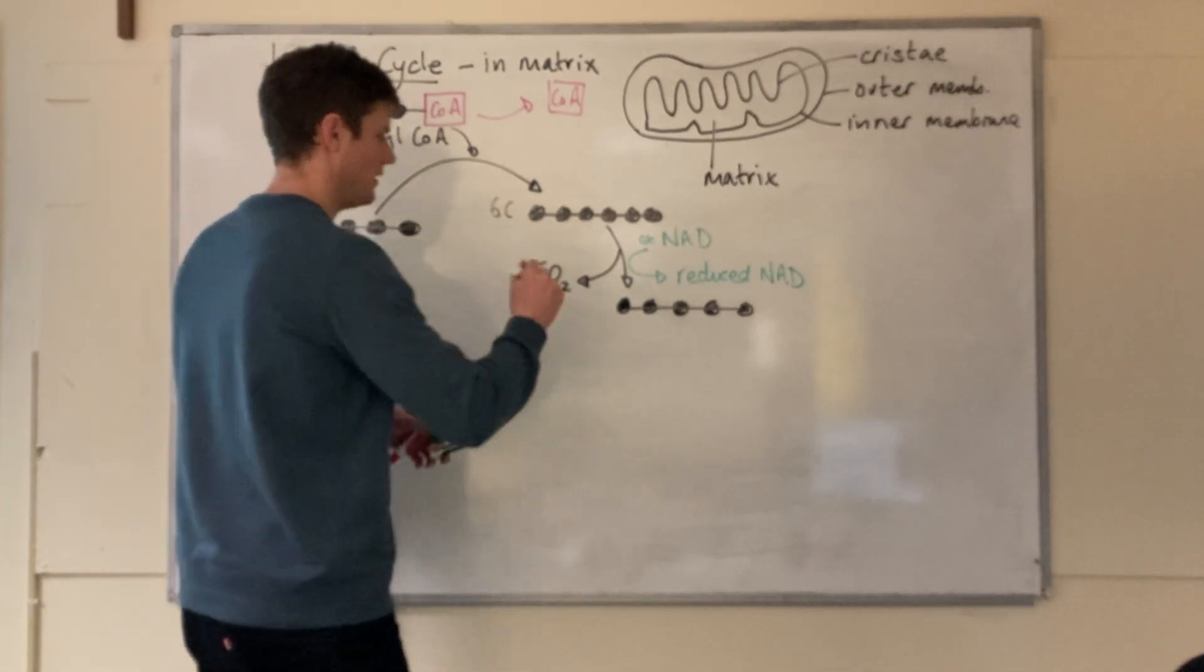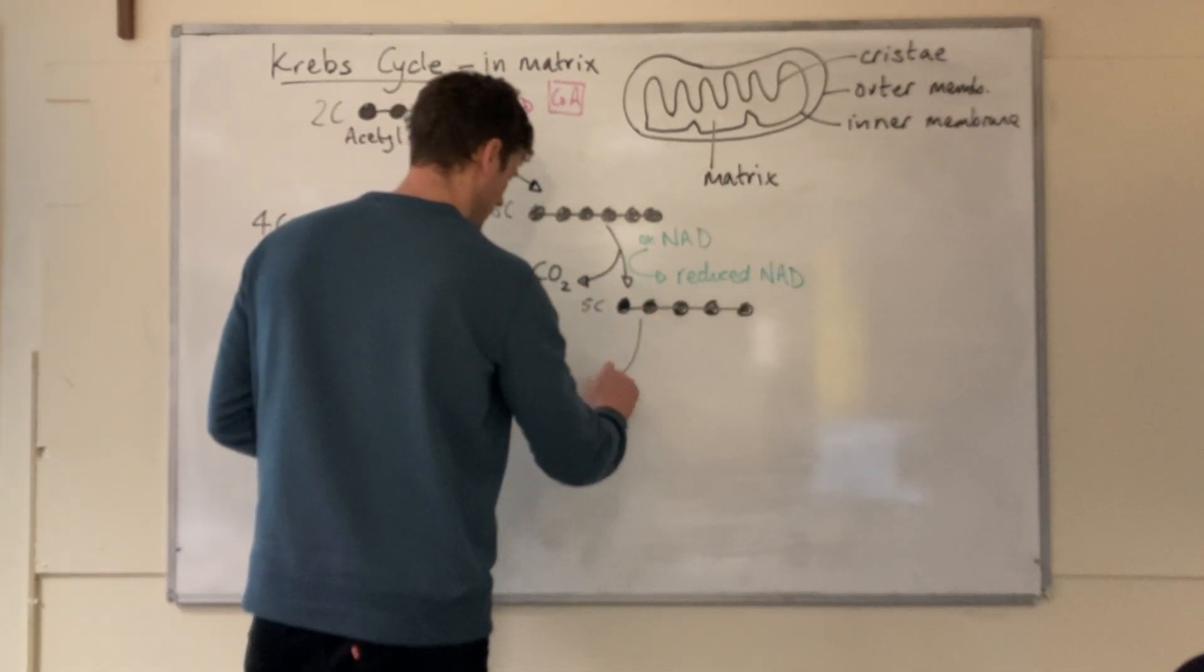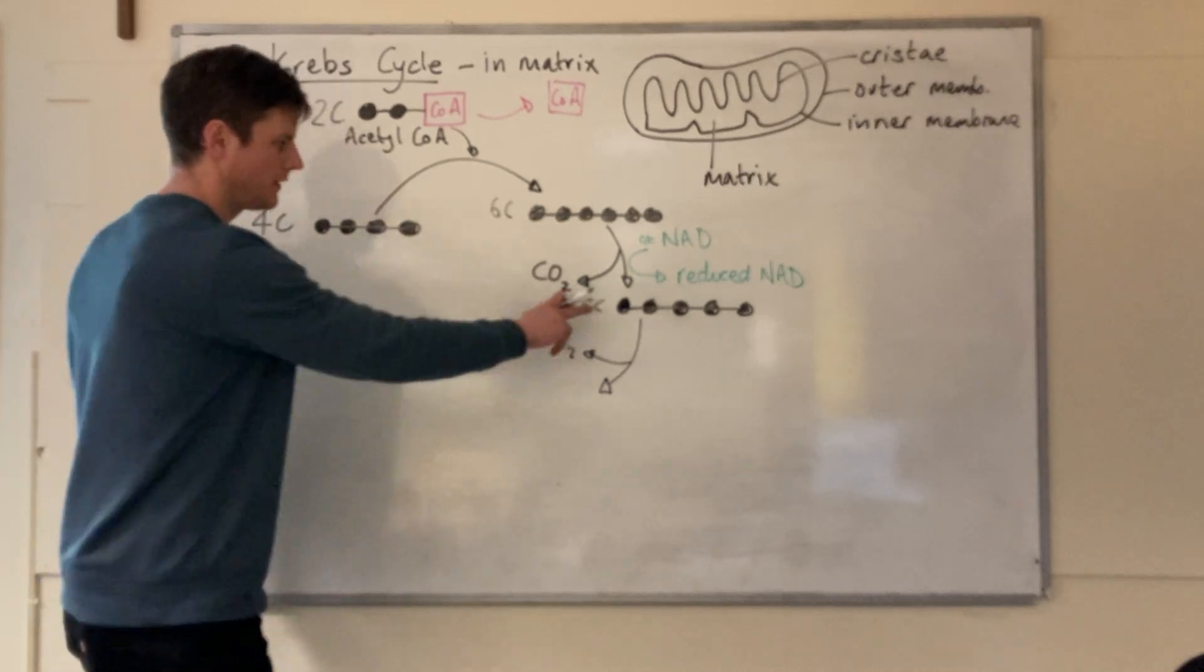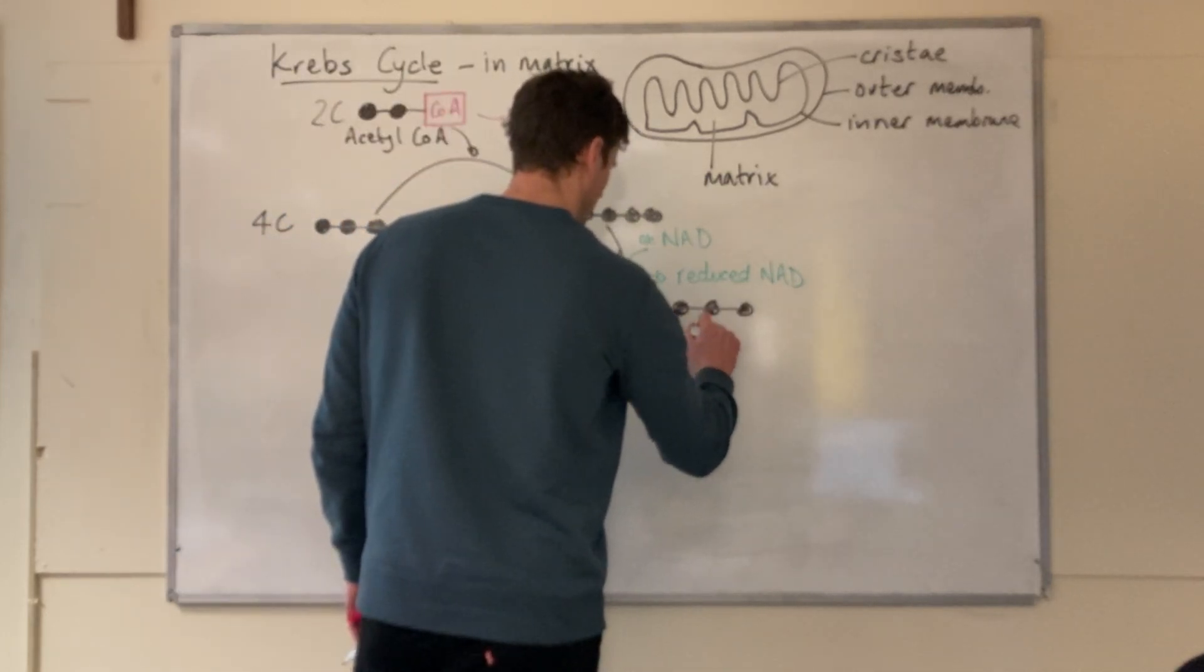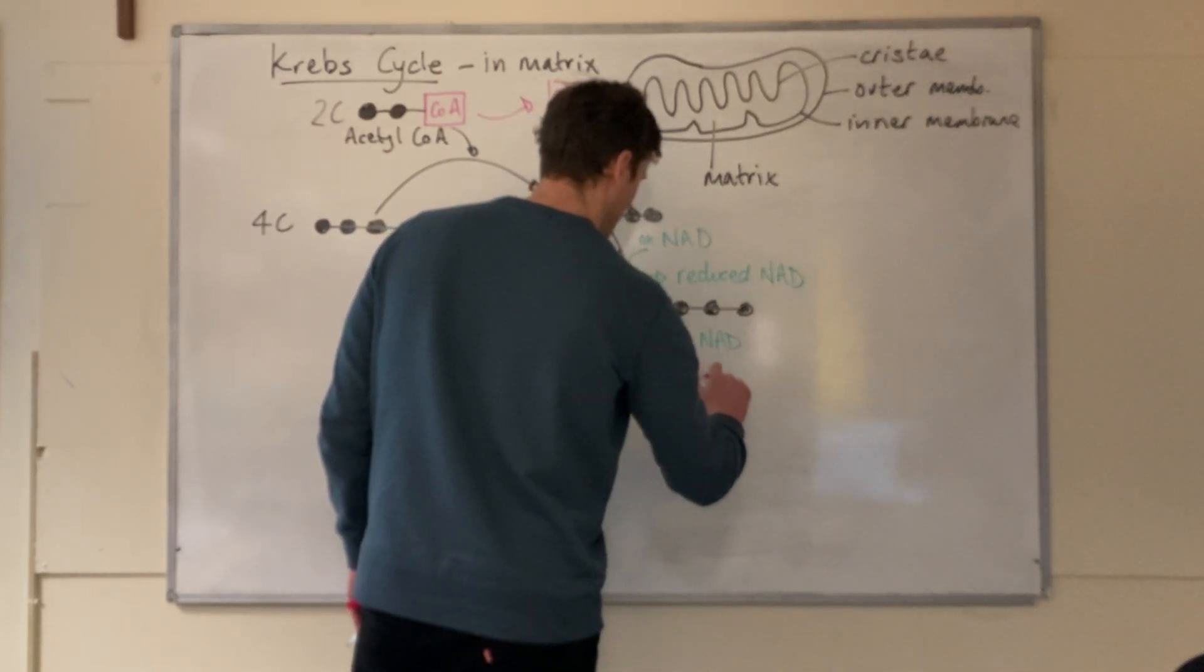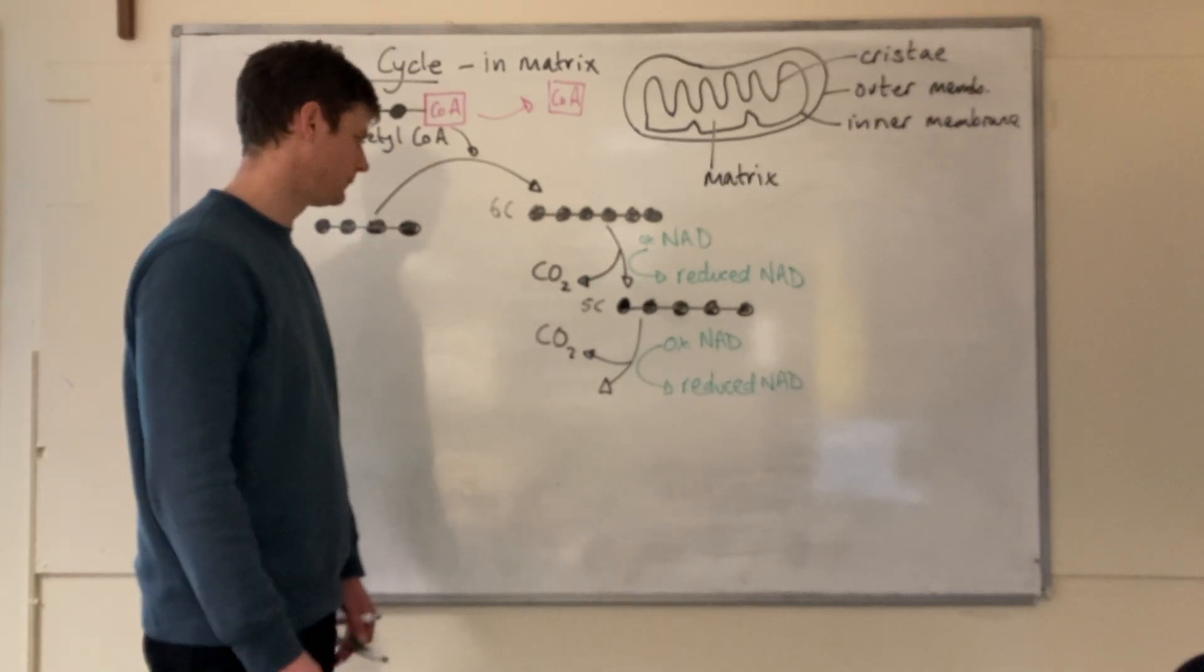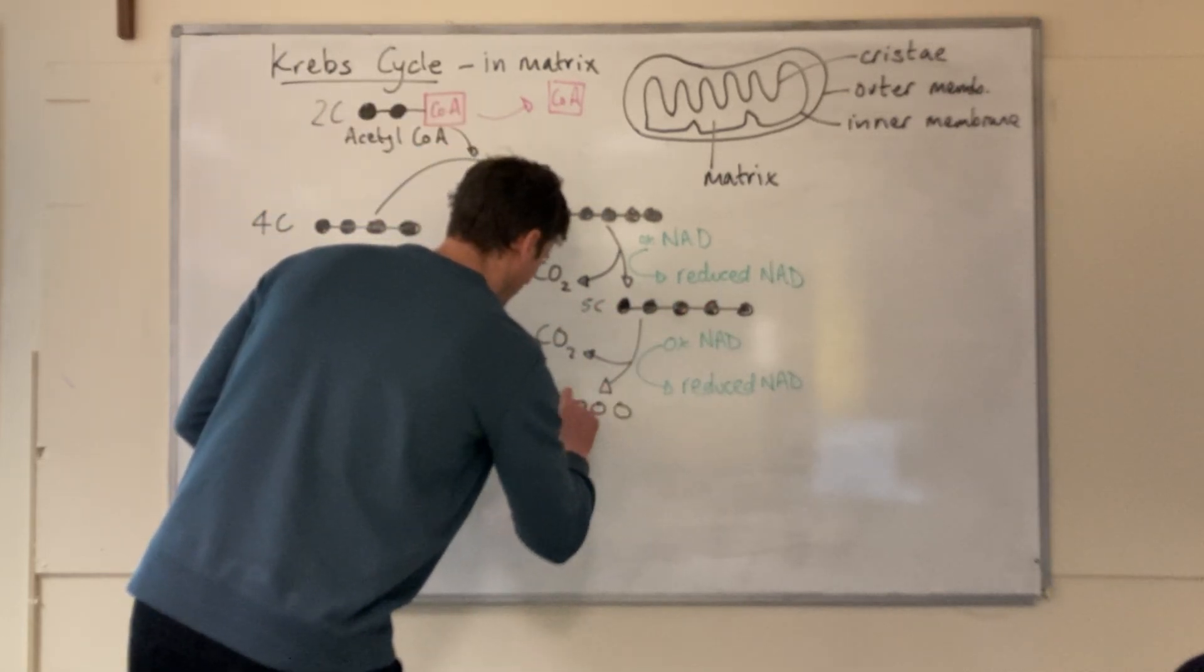This five carbon molecule then undergoes another decarboxylation. It undergoes the loss of carbon dioxide. This is an example of an oxidation, and therefore, at the same time, oxidized NAD is reduced by accepting hydrogen and electrons to form reduced NAD. That forms now a four carbon molecule.